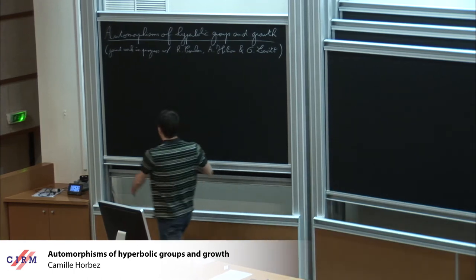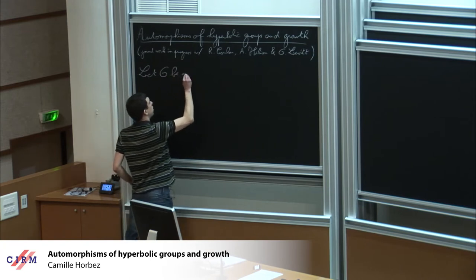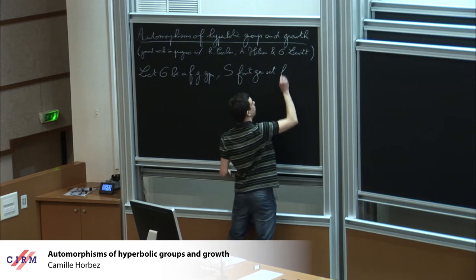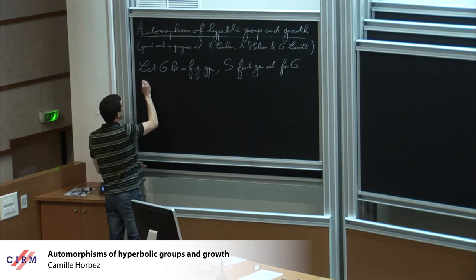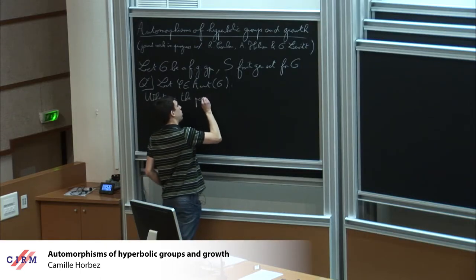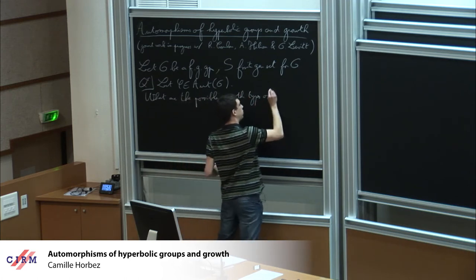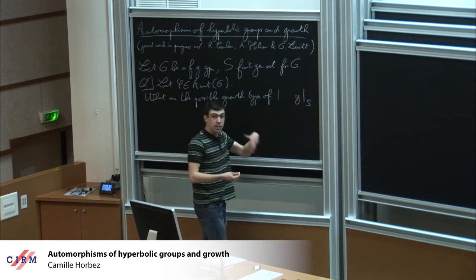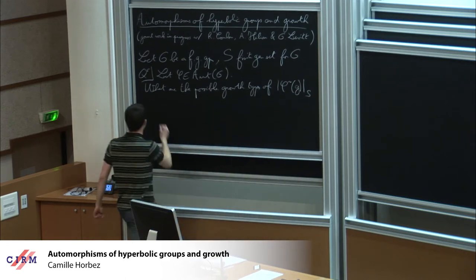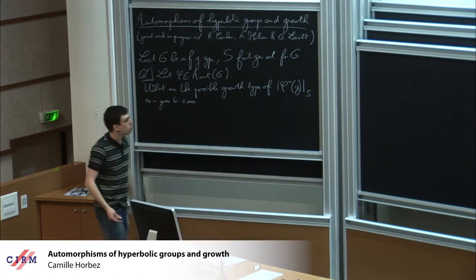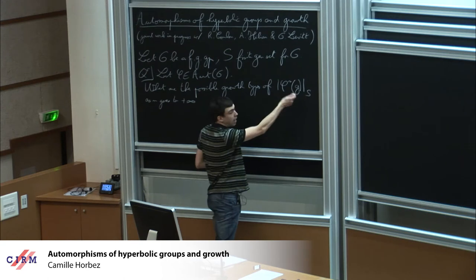Here is a very general question. I'm going to let G be a finitely generated group, and fix a finite generating set S for G. I'm going to pick some automorphism phi of G, and look at what are the possible growth types for the word lengths, measured with respect to S, of an element G of the group as you start iterating your automorphisms as n goes to infinity. For example, I'd like to know whether this growth can be exponential or polynomial, or what kind of behaviors you can see for growth of elements under iteration of phi.